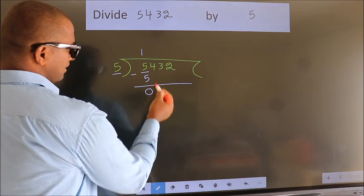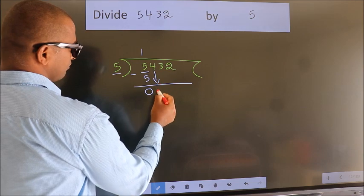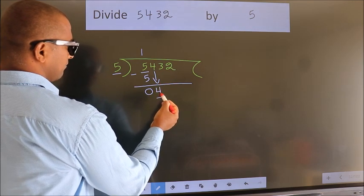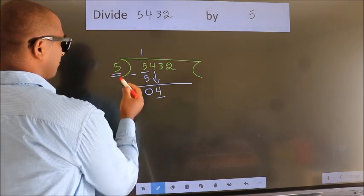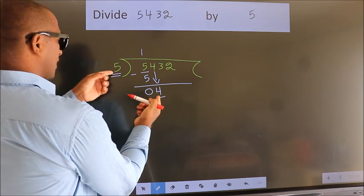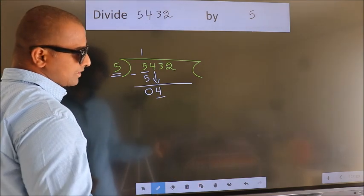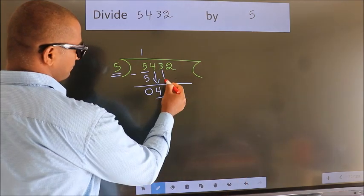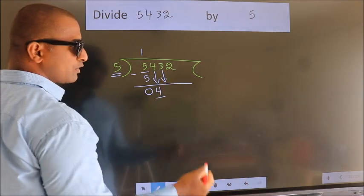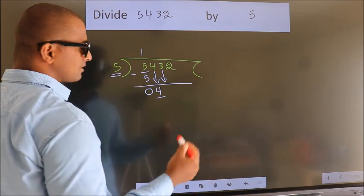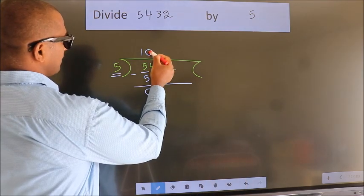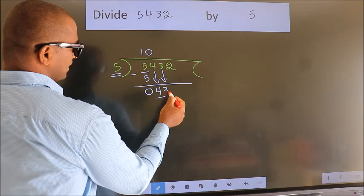After this, bring down the beside number. So 4 down. Here we have 4. Here 5. 4 smaller than 5. So we should bring down the second number. And the rule to bring down the second number is, put 0 here. Then only we can bring down this number.